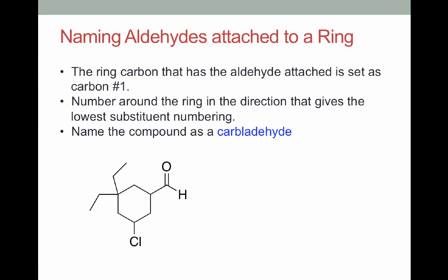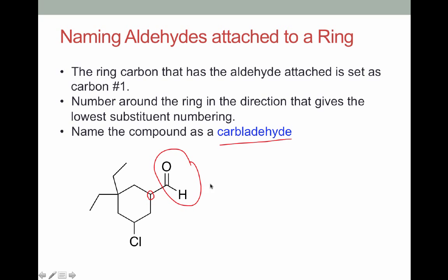One other case you might run into is having an aldehyde attached to a ring. If an aldehyde is attached to the ring, we do it a little differently. We follow basic IUPAC rules making the ring our parent, numbering around the ring. We pick the carbon that has the aldehyde attached as carbon one. In this case, the aldehyde carbon isn't part of the parent chain. We'll name the ring as we would just a cyclic alkane, and follow up the name with 'carbaldehyde' to represent that we have this carbaldehyde group attached.